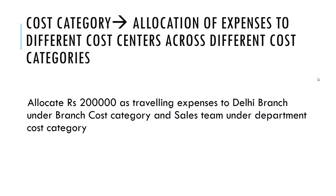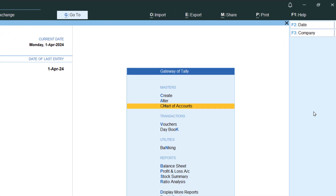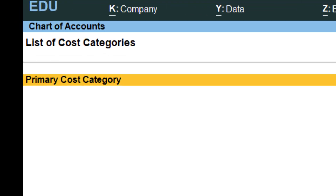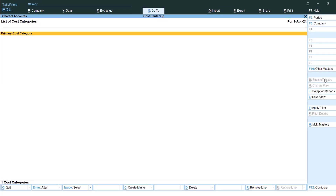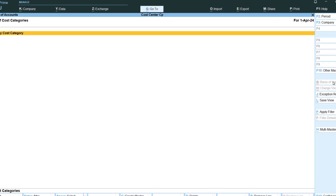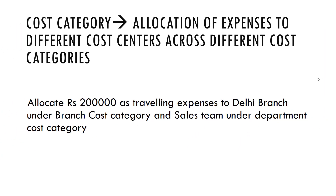The last topic in cost centers is cost categories. A cost category allows allocation of the same expenses to different cost centers across different categories simultaneously. By default, only a Primary cost category exists. In this illustration, we need to allocate two lakhs of traveling expenses to Delhi Branch under a 'Branch' cost category, and to Sales Team under a 'Department' cost category — so we need to create two categories.